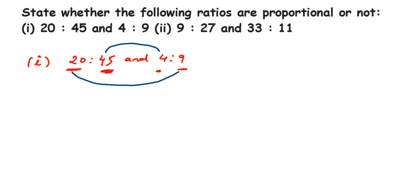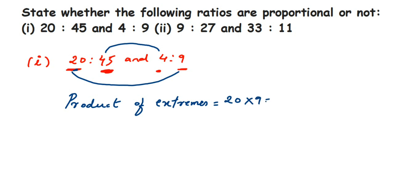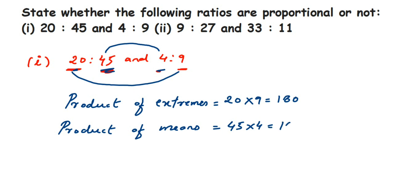Let's find the product of extremes: 20 multiplied by 9 equals 180. Now the product of means: 45 multiplied by 4 also equals 180. The product of extremes and the product of means are equal, so we can conclude that the ratios are proportional — they are in proportion.